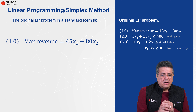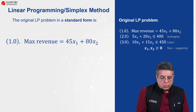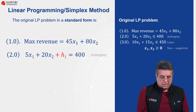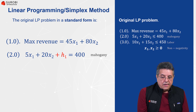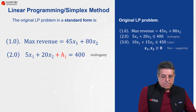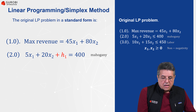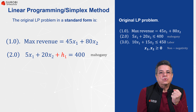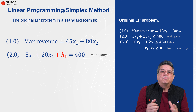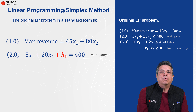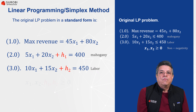Let's transform this original problem into another form called the standard form. We are going to transform the inequalities into equalities. To transform the mahogany constraint, we add a slack variable h1 that measures the unused capacity of mahogany. So the mahogany constraint will be expressed as an equation: 5x1 plus 20x2 represents the consumption of mahogany. If we add the unused capacity, these two terms should equal the total capacity of 400 units. We can do the same for the labor constraint.